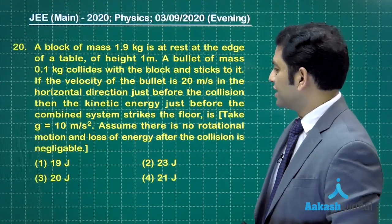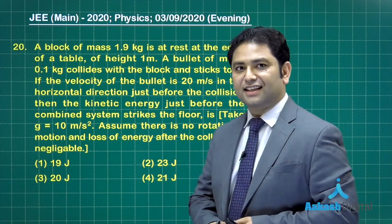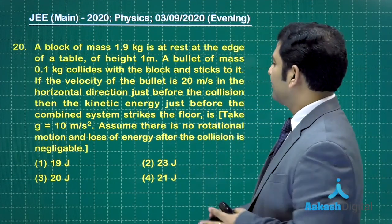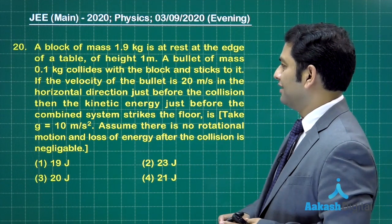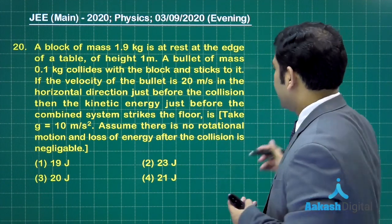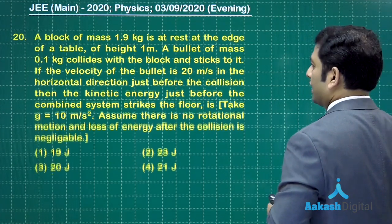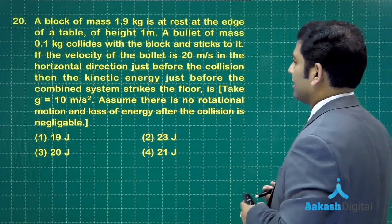Question number 20. There's a block of mass 1.9 kg at rest at the edge of a table of height 1 meter, and a bullet of mass 0.1 kg collides with the block and sticks.